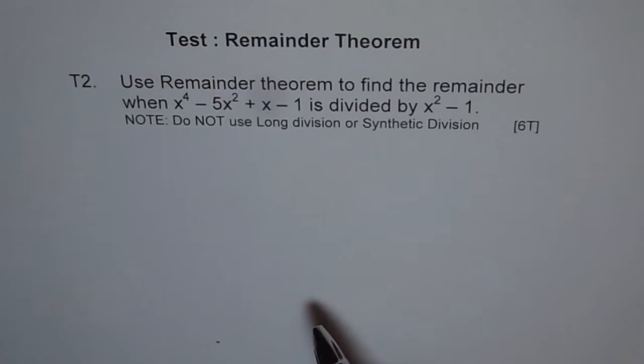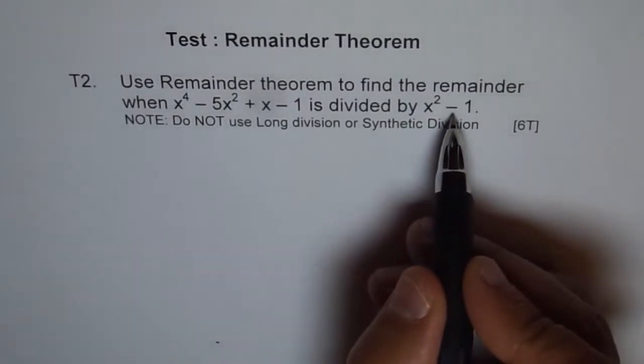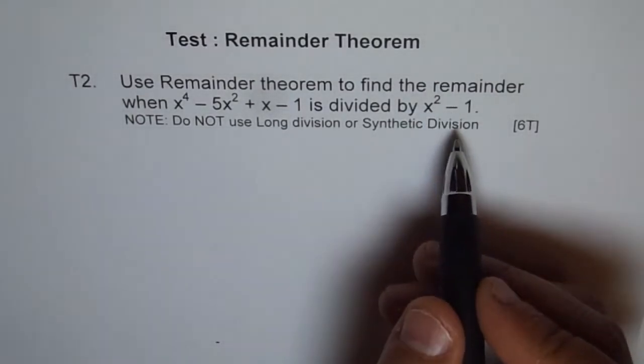You could have done long division to find the remainder. Here we are restricted to use only remainder theorem. So we need to really think outside the box to get this answer. We will try to use our division statement to find the answer. That's kind of a hint to you.